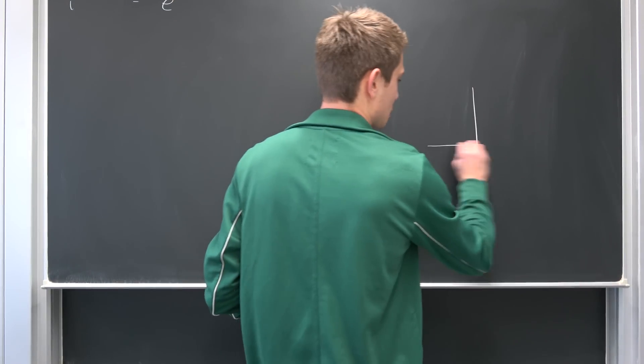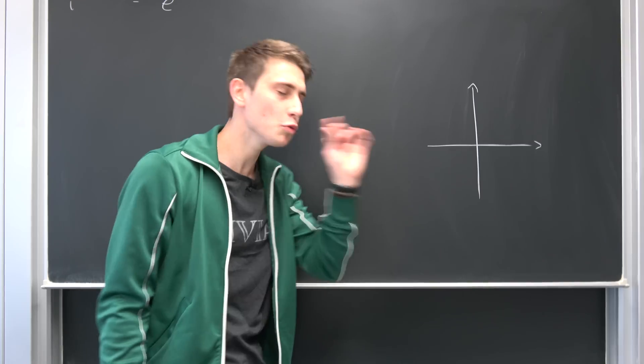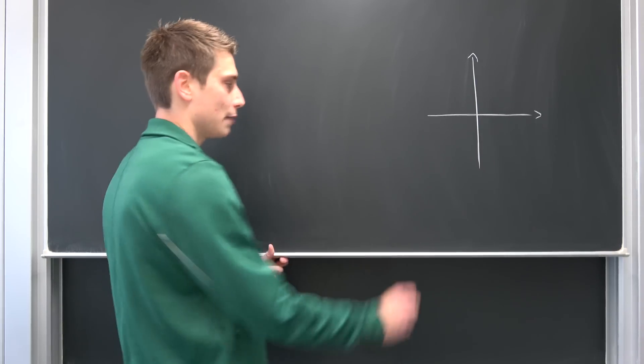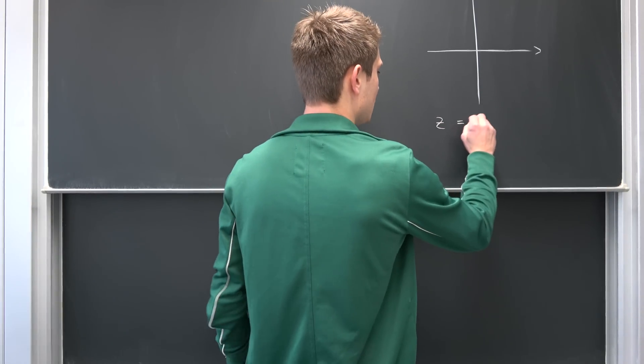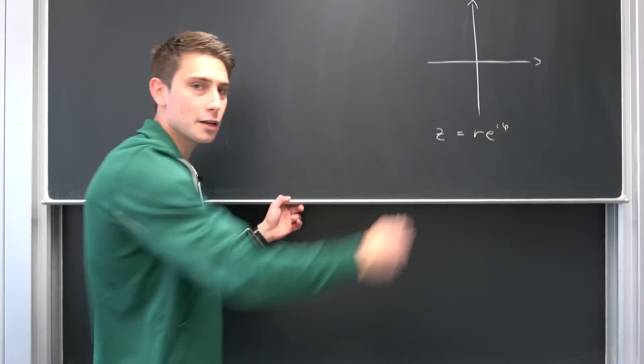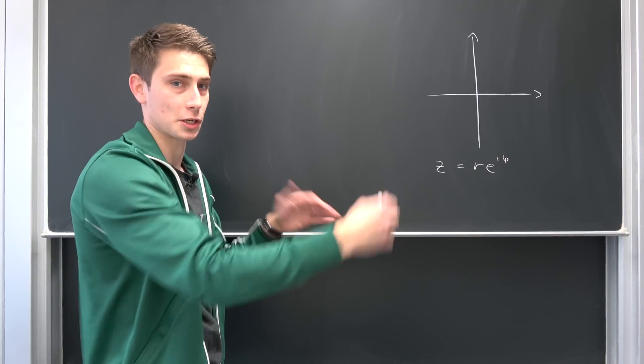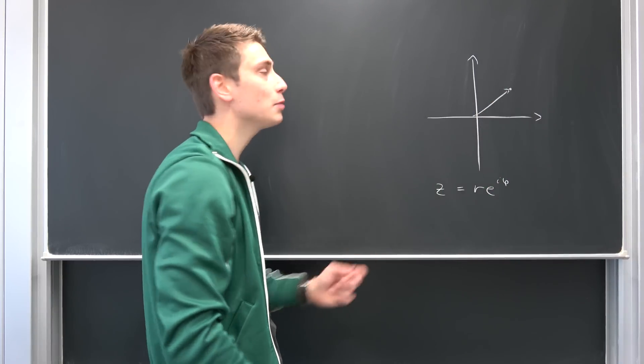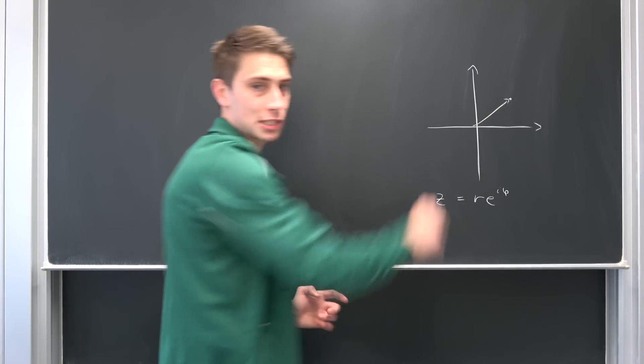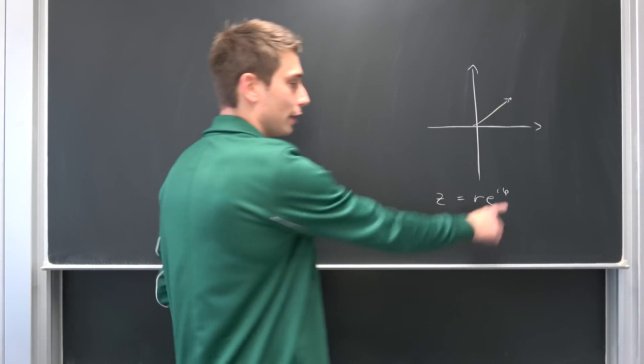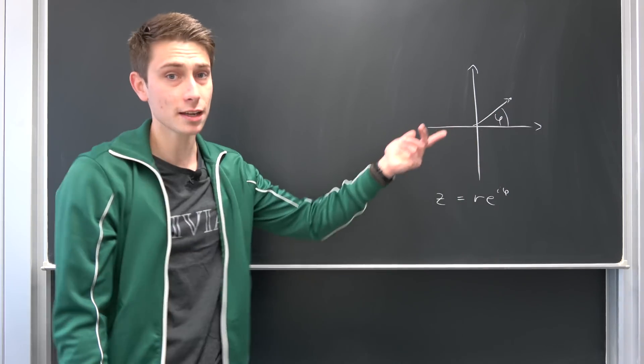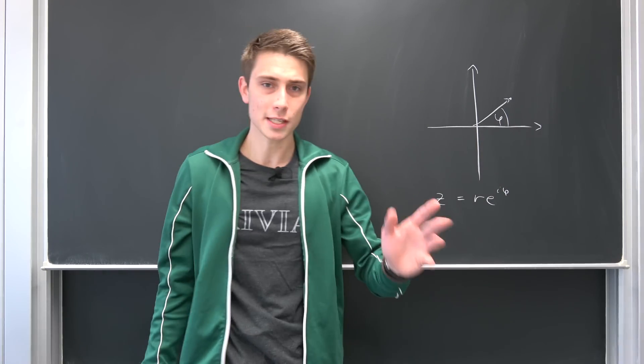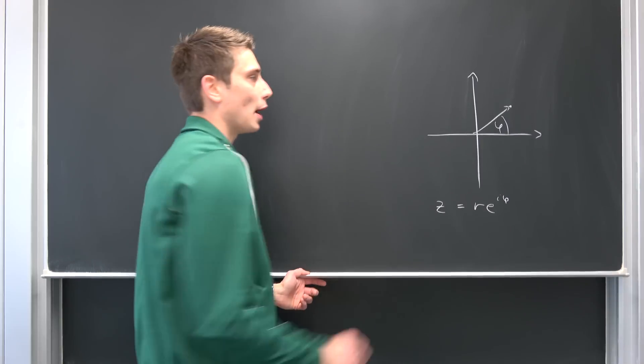So let's take a look at the complex plane for once, our best friend, our 2D boy, our most favorite 2D boy. We can express every complex number in the form of z being equal to r times e to the i phi, where r is just the length of our vector in the complex plane. If we have this vector right here where the tip is going to represent our complex number, the length of this thing is our r. And phi is the angle being enclosed by our vector and our real axis.